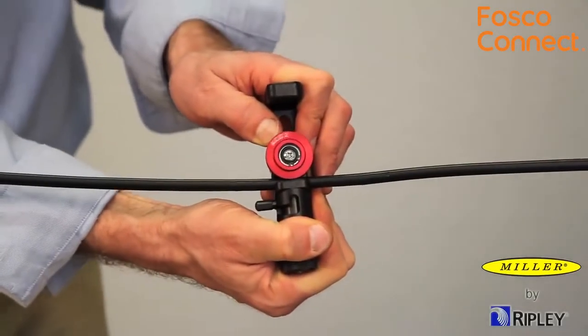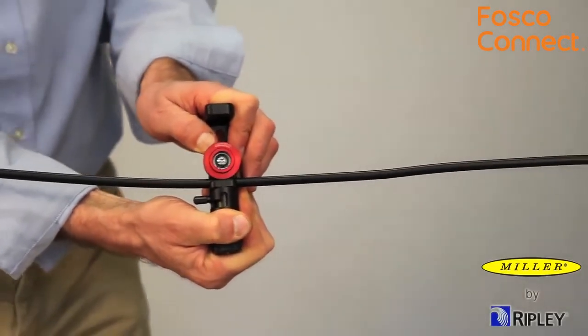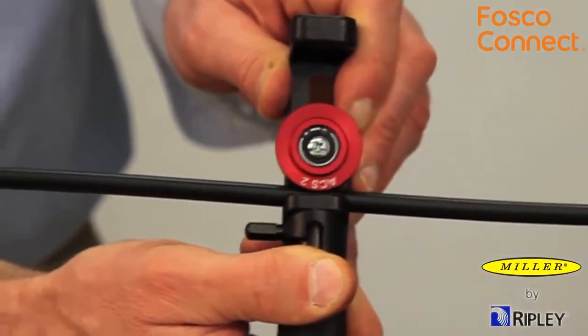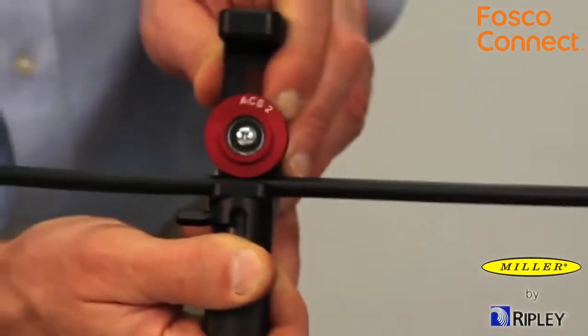If you are working on an external strength member cable with a lay, the tool will follow the hardened strength members and slightly spiral down the cable. Allow the tool to follow the strength member.